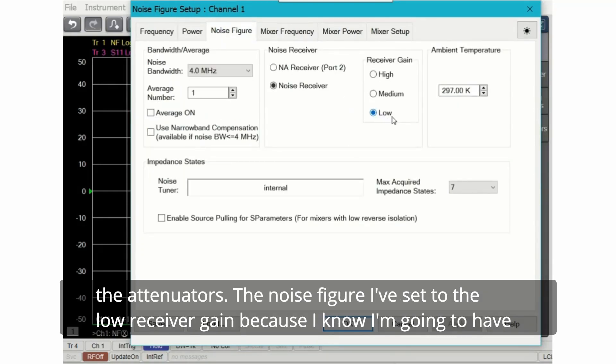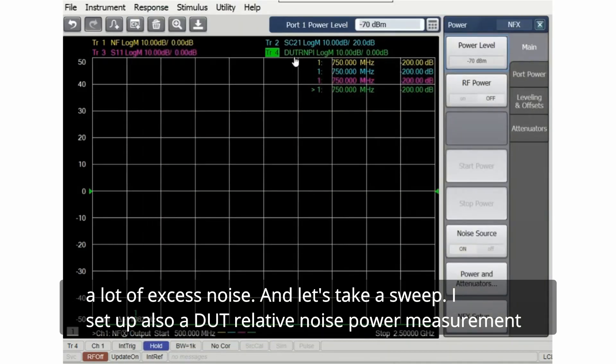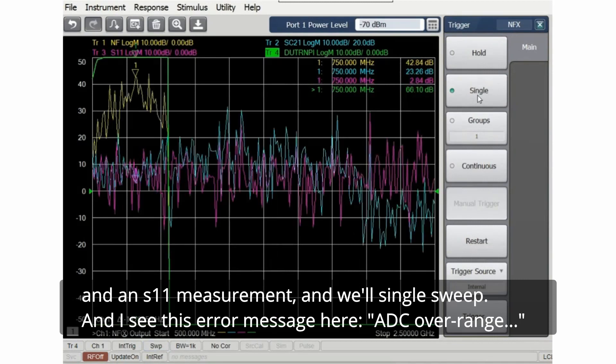The noise figure I've set to the low receiver gain because I know I'm going to have a lot of excess noise. Let's take a sweep. I've set up also a DUT relative noise power measurement and an S11 measurement and we'll single sweep.